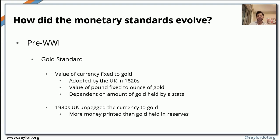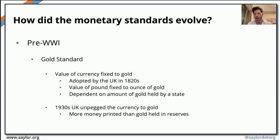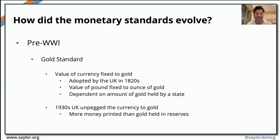First things first, if we want to discuss how monetary standards evolved throughout time, perhaps the best way to start is with the gold standard, which was pre-World War I. The gold standard means that the value of a particular currency was set and fixed to an ounce of gold. The very first country to adopt the gold standard was the United Kingdom, back in the 1800s. The UK held a reserve of gold, and each ounce of gold was equivalent to a particular currency exchange rate based on the value of gold held.